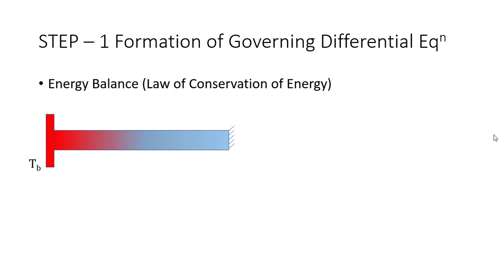In order to analyze the entire problem we have to first divide the entire fin into a number of small elements. Let us assume that we are dividing the entire fin into a number of small divisions. In order to get the energy balance we consider an element at a distance x from the base of the fin and then perform the control volume analysis for this element.